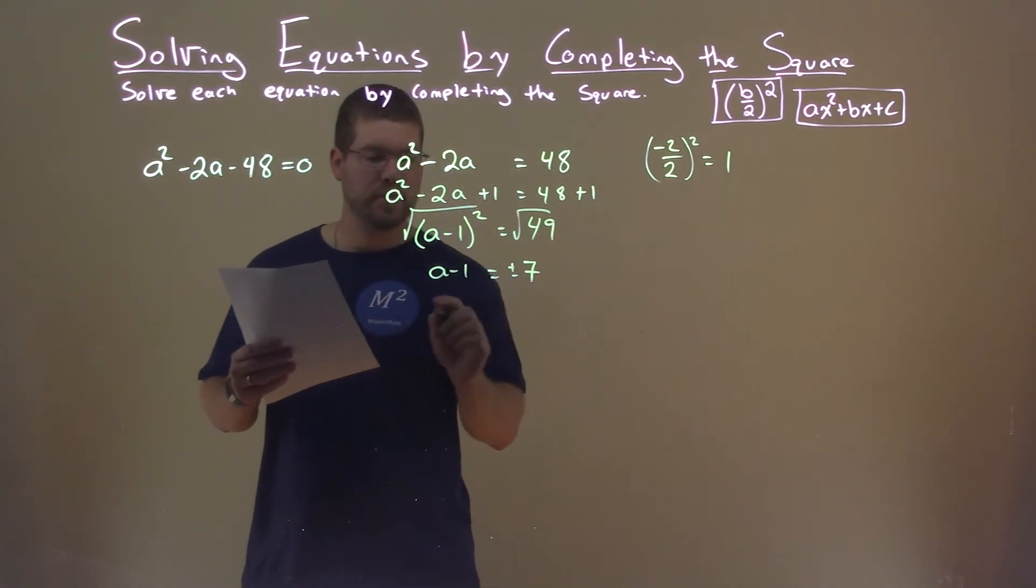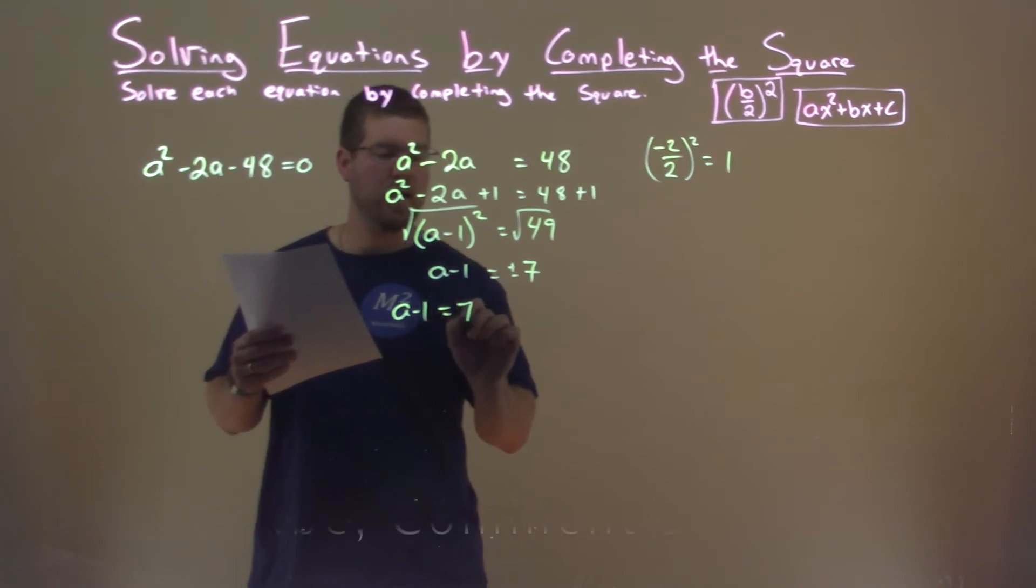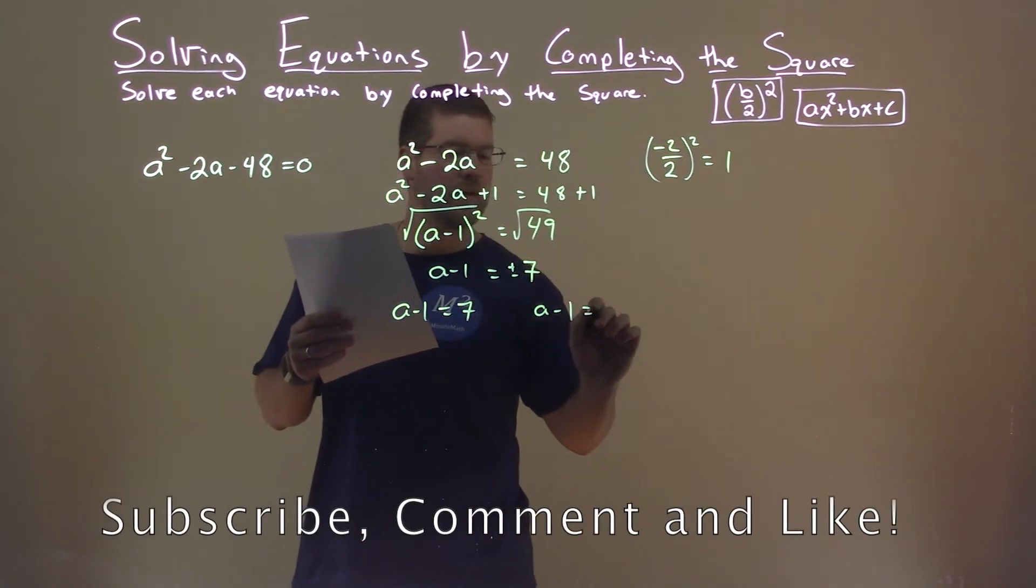So let's break it apart into two equations. a minus 1 equals a positive 7, a minus 1 equals a negative 7.